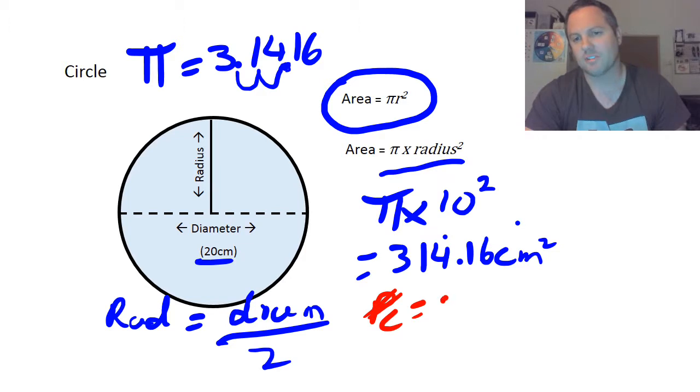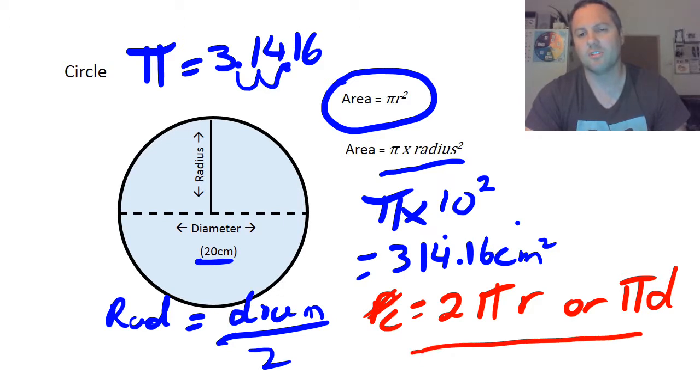Now the circumference can be 2πr, or pi times diameter. So it's nice and simple: 2 times pi times r is exactly the same as pi times d. Instead of making the 20 into 10, just keep it. But that's only circumference. Do not do that for area.